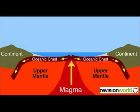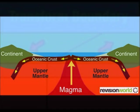In the oceanic divergent boundary, the oceanic crust cracks and moves apart. Beneath it there is magma. The ridge made by the crack is called a mid-ocean ridge. Magma comes up through the mid-ocean ridge, dries, and becomes rock. The newer the rock, the closer it will be to the mid-ocean ridge.